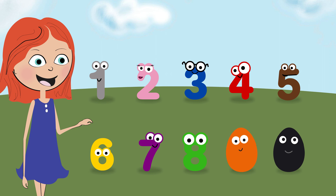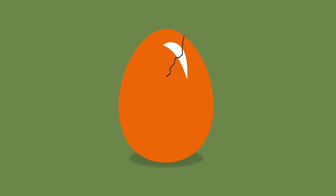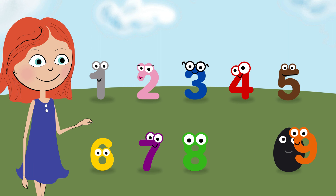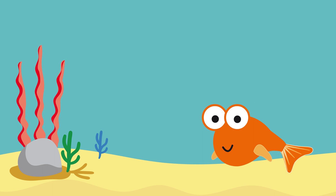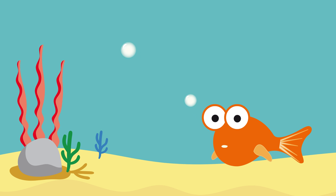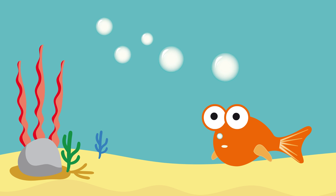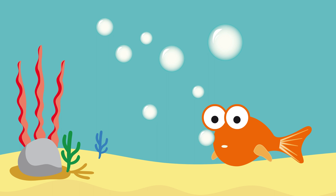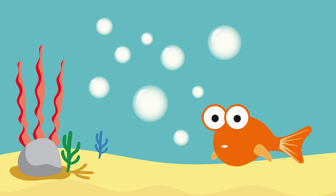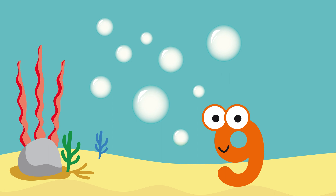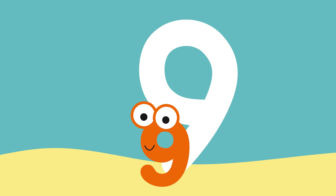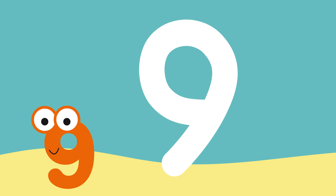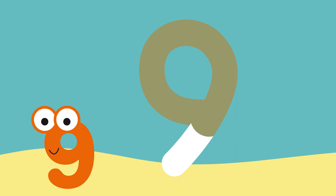What could be inside the orange egg? Nine. Nine. One. Two. Three. Four. Five. Six. Seven. Eight. Nine. Nine little bubbles. Nine. We write number nine like this. Nine.